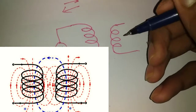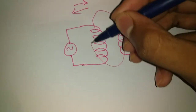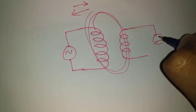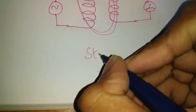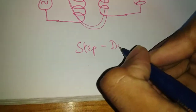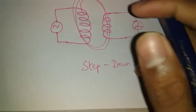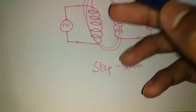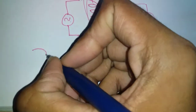In the forward and backward direction, we have to start the magnetic field and the current flow. There is a step-down transformer. There are three types: step down, step up, and idle.